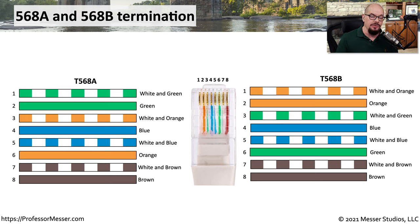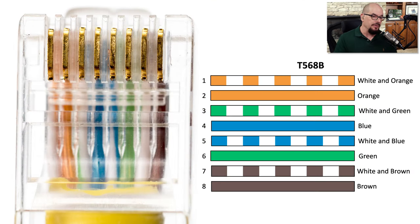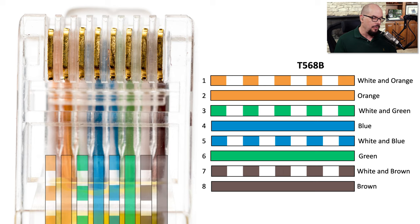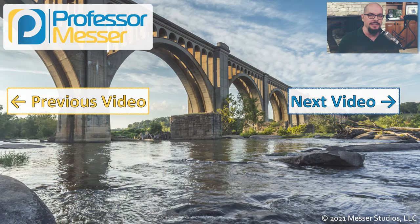In the T568B standard, those colors are simply reversed. One way to tell what standard is being used in a particular cable is to look very closely at the colors along the outside and map each individual color back to either the A or B standard. In this example, we can look at the back of this cable, put the B standard right next to it, and see that each one of those colors matches up — so this particular connector is wired with the T568B standard. Try this yourself: grab an ethernet cable, look at the wires on the connector, and see if yours are wired for T568A or T568B.